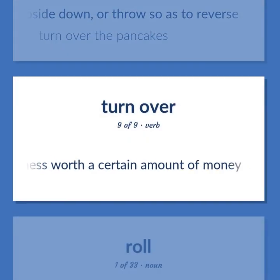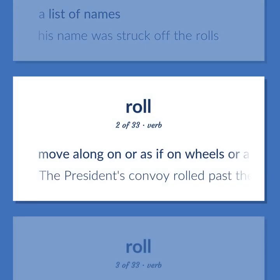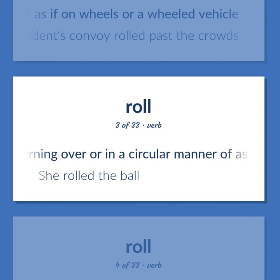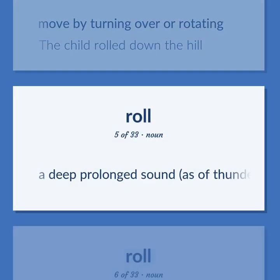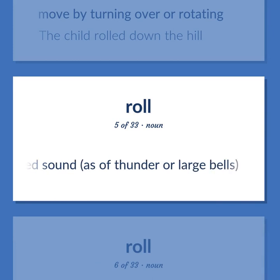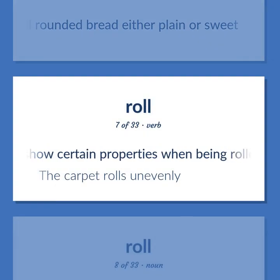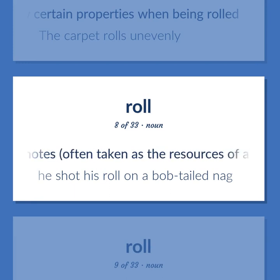ROLL: A list of names — 'his name was struck off the rolls.' Move along on or as if on wheels or a wheeled vehicle — 'the president's convoy rolled past the crowds.' Cause to move by turning over or in a circular manner or as if on an axis — 'she rolled the ball.' Move by turning over or rotating — 'the child rolled down the hill.' A deep prolonged sound, as of thunder or large bells. Small rounded bread, either plain or sweet. Show certain properties when being rolled — 'the carpet rolls unevenly.' A roll of currency notes, often taken as the resources of a person or business — 'he shot his roll on a bob-tailed nag.'